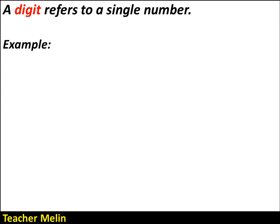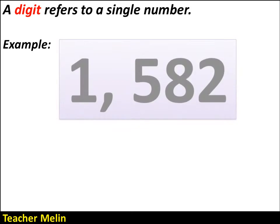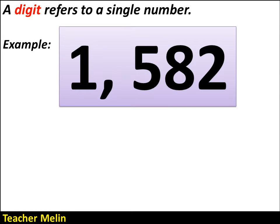A digit refers to a single number. For example, the number is 1582. Number 2 is a digit. Number 8 is also a digit. Number 5 is also a digit. And number 1 is also a digit.